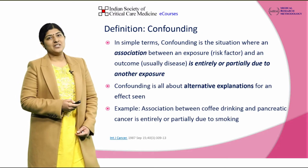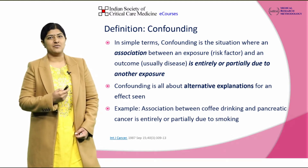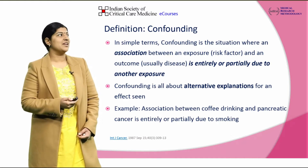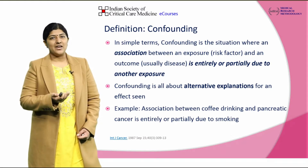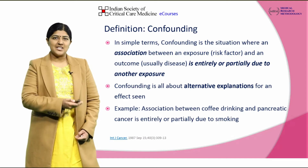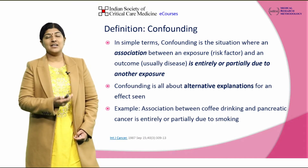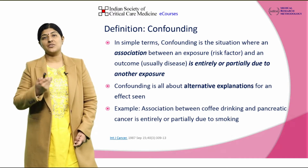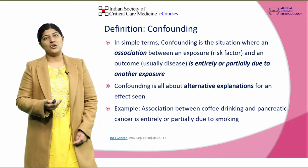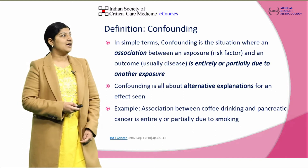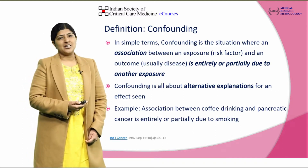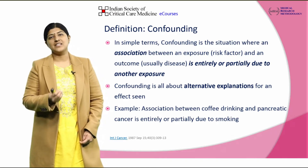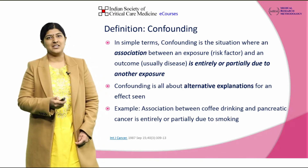To begin with, what exactly is the definition of a confounder? In simple terms, confounding is a situation where an association between an exposure and the risk factor can be completely or partially explained by the presence of a third factor, which we call a confounder. Confounding offers alternative explanations for the effect that is seen in epidemiological studies.